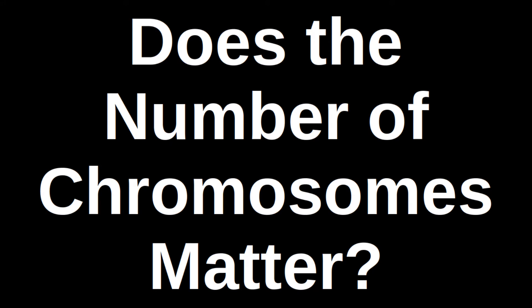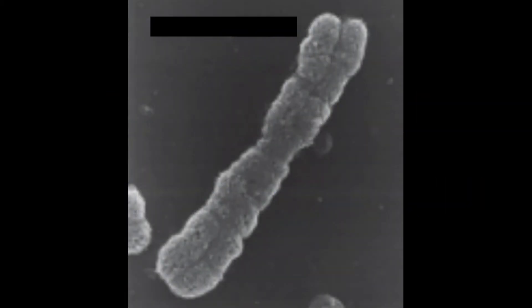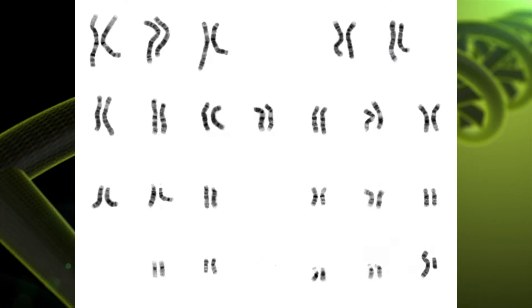Hello and welcome to this video on chromosomes, or more accurately the number of chromosomes an organism has. The average human has 23 chromosomes in two pairs, for a total of 46 chromosomes. Of these, one pair is sex specific — your X and Y chromosomes.